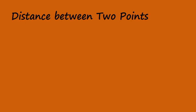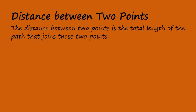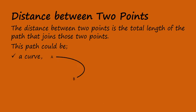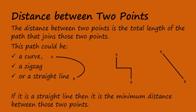Distance between two points. The distance between two points is the total length of the path that joins those two points. This path could be a curve, a zigzag, or a straight line. If it is a straight line, then it is the minimum distance between those two points.